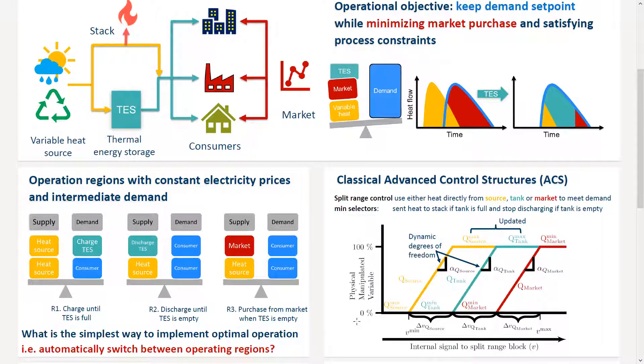In this work, we are considering constant electricity prices and we have identified three operation regions. If we have more supply than demand, we will charge the thermal energy storage until this is full. When we have less supply than demand, we will discharge the thermal energy storage system until this is at the minimum capacity. After which, in operating region three, we will need to purchase from the market.